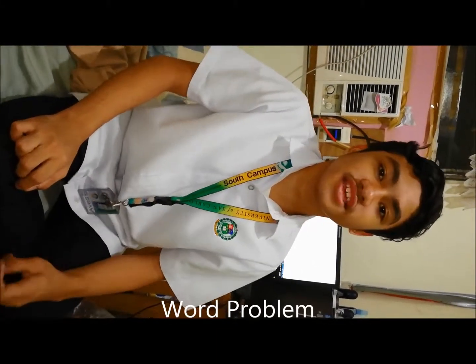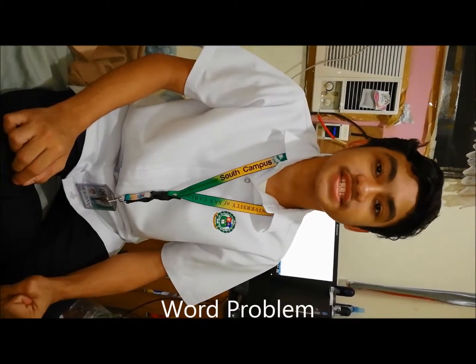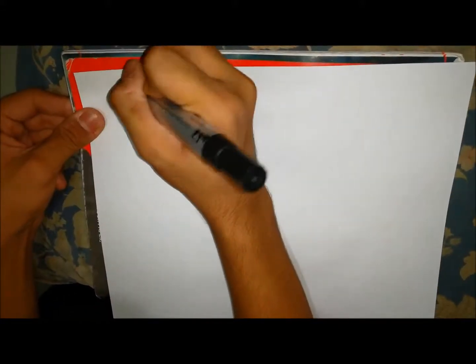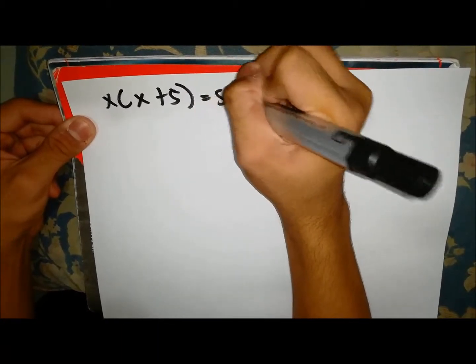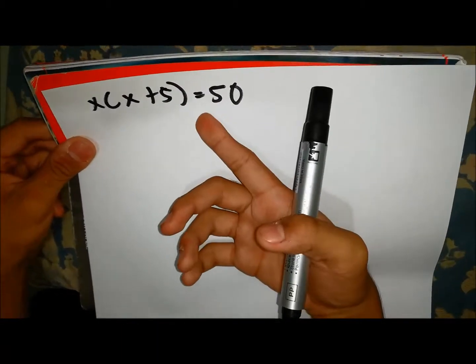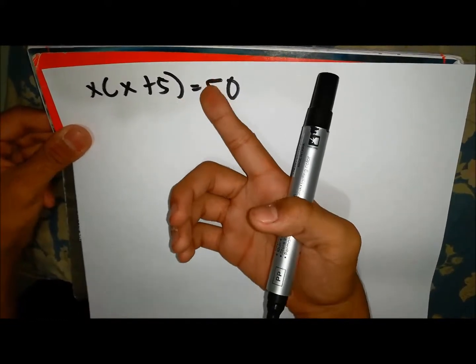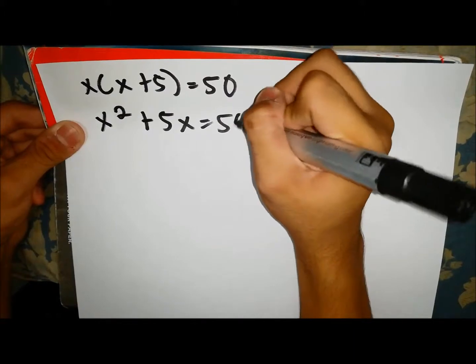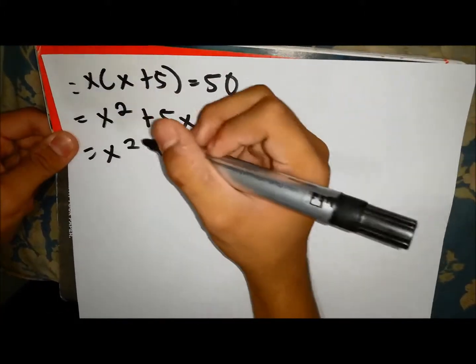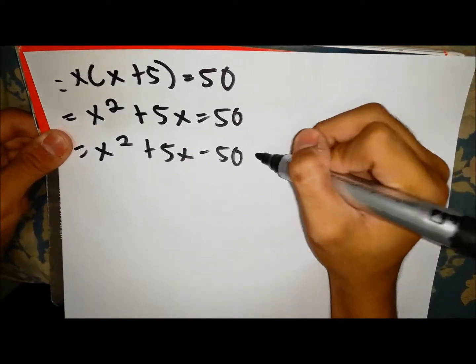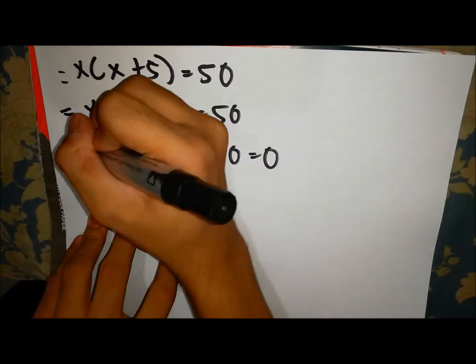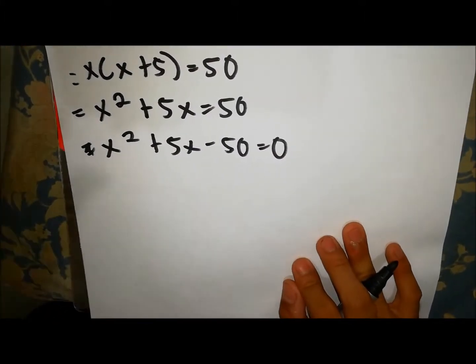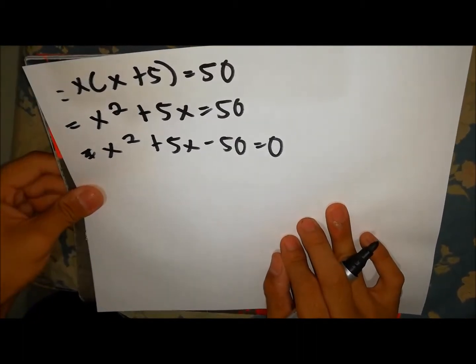The length of a rectangle is 5 cm more than its width and the area is 50 cm squared. Find the length, width, and the perimeter. Let the width be x. So x times (x plus 5) equals 50. We must convert it to standard form: x squared plus 5x equals 50, then x squared plus 5x minus 50 equals 0. Since this is already the standard form, we must apply it into a method.